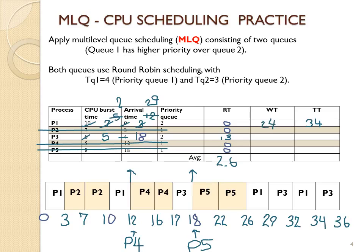For turnaround time: p1 finished at time 34, arrived at time 0 — wait time was 24 units, CPU time was 10 units. P2 completed at time 10, arrived at time 3 — active for 7 time units, never waited. P3 finished at time 36, arrived at time 4 — active for 32 time units, waited 26 of those. P4 was active for 5 time units and didn't wait at all. P5 was active for 8 time units and didn't wait. Add these up and divide by 5 for the averages.